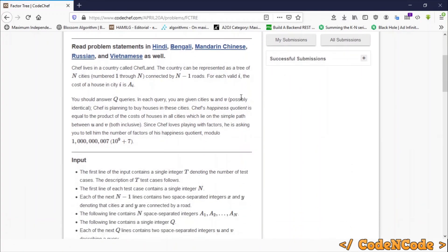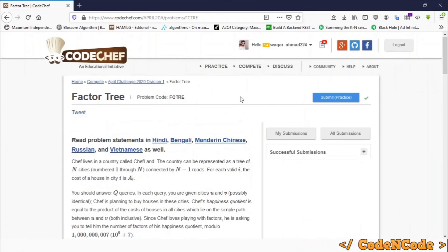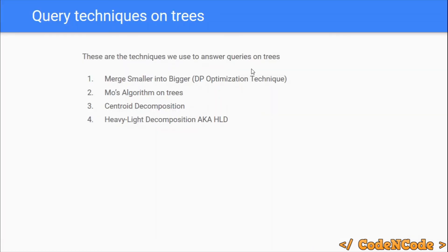Finally, 'Factor Tree' from the Long Challenge Div 1 can be solved using Mo's algorithm. There are other problems for each technique which I can't show here as the lecture would be too long — we'll see them as we go. We'll start the series with Mo's algorithm on trees, since the prerequisite playlist 'sqrt' is already available. Then we'll cover tree flattening, followed by Merge Smaller into Bigger, Centroid Decomposition, and finally HLD. Thank you for watching — keep coding!